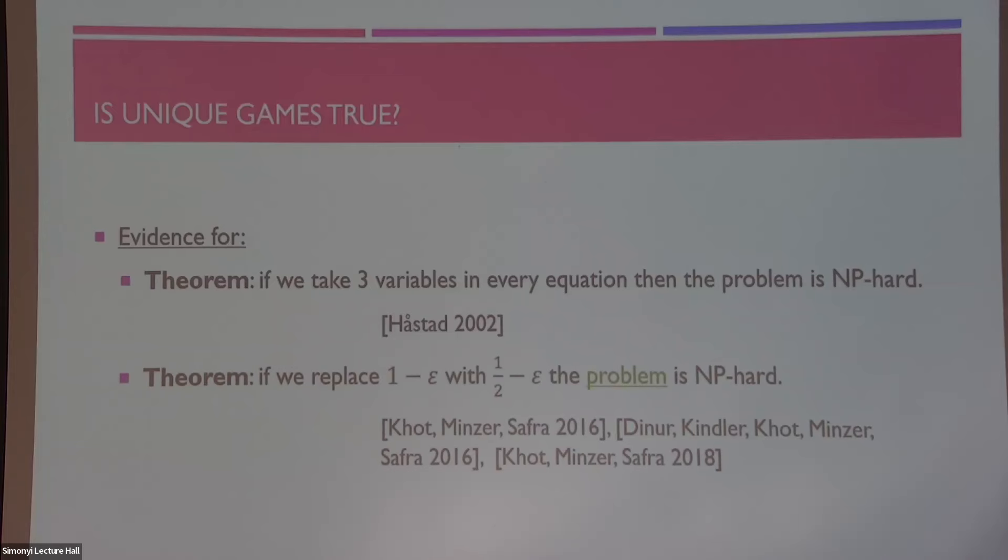Another theorem that is highly non-trivial by all these authors here say that a slightly weaker variant of this conjecture also holds true, where you replace this one minus epsilon promise with a half minus epsilon. Even if you're not following exactly what this means, like the one minus and the half minus, this is just saying that a weaker version of this conjecture holds true, and we may suspect that we can sort of push this half all the way up to one.